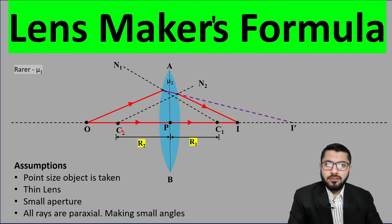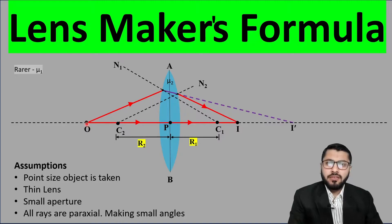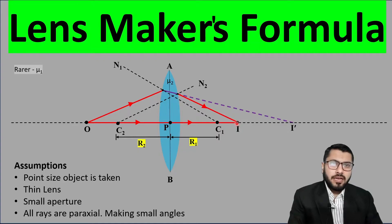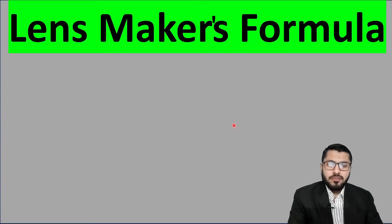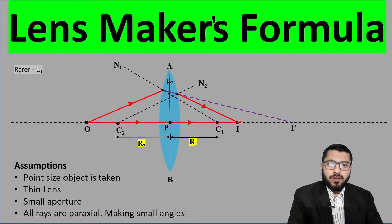Now I take a second ray emitting from O and passing through the optical center P. This ray cuts the image at I. So my final image is formed at I. An image is confirmed when at least two rays converge.